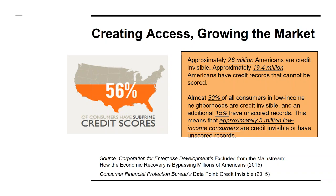Solstice hypothesizes that FICO is an imperfect proxy for qualifying solar customers, and that those with lower or no credit scores might still pay their utility bills regularly and may not represent the financial risk that current scores imply. In the fall, Solstice was awarded a grant through the Department of Energy's SunShot Initiative — the SEEDS II grant, Solar Energy Evolution and Diffusion Studies — to scale low to moderate income inclusion in community solar through alternative qualifying metrics to FICO.